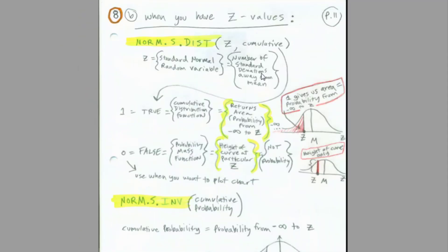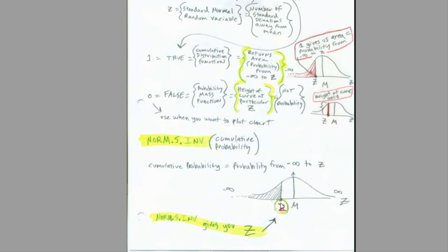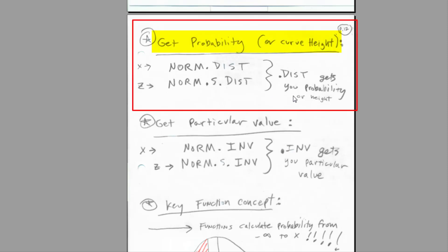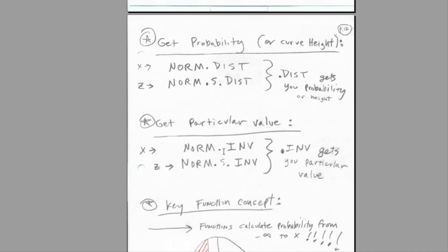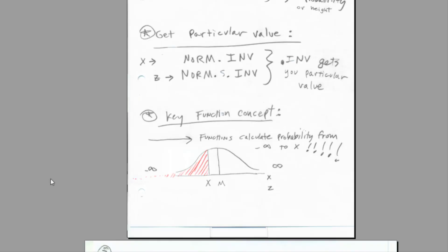For z values, we use NORM.S.DIST — the 'S' stands for standardized value. We give it a z, and it will calculate cumulative probability from the low end up to the z (argument 1), or the height (argument 0). NORM.S.INV takes a cumulative probability and returns the z. Think of it this way: NORM.DIST is when you have x values; NORM.S.DIST is when you have the standardized z value. The inverse versions of both get you the particular value. The key concept is always from the low end up to x.